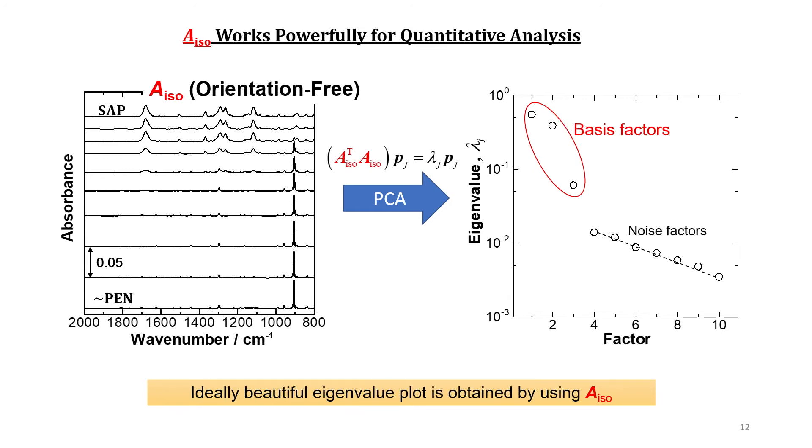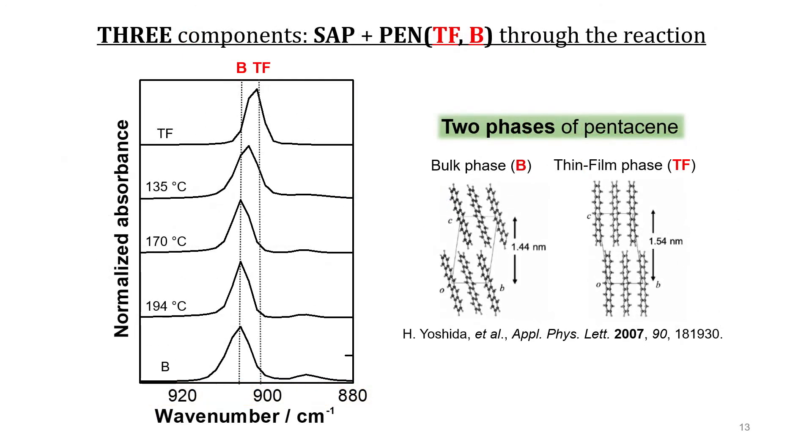We know that the two components of SAP and pentacene are involved in the system. Then, why three? The reason is that the pentacene film has two different phases of the bulk and thin film phases, which can be discriminated by both X-ray diffraction and infrared spectroscopy. As a result, we have three constituents in the system as revealed by the PCA analysis using the A_iso spectra.